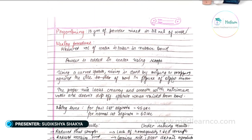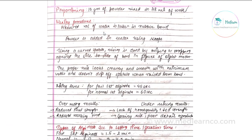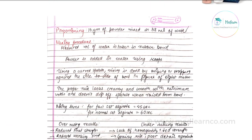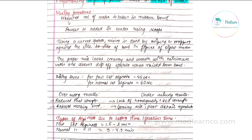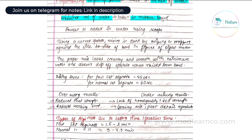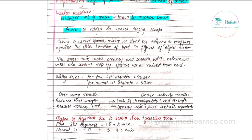Proportioning: 16 g of powder is mixed with 38 ml of water — this is the correct proportioning. For the mixing procedure, first the measured volume of water is taken in the rubber bowl, then the powder is added with the help of the scoops.